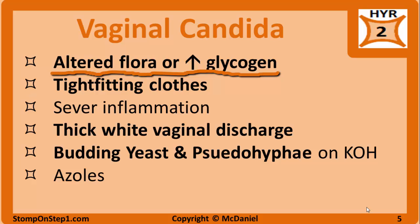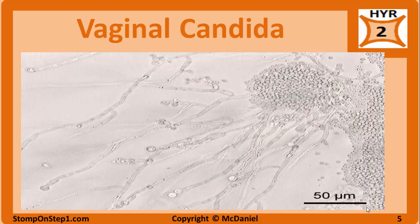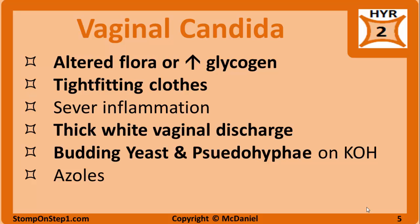It can also happen in individuals with increased glycogen, including diabetics, pregnant individuals, and women on oral contraceptives. Keeping the vagina warm with tight-fitting clothing, like a bathing suit, is also a risk factor. Severe inflammation leads to bright red erythema, vulvar pruritus, severe itching, burning, dysuria, and dyspareunia. There is a lumpy or thick, adherent, white cottage cheese-like discharge. Yeast infections are odorless, and vulvovaginal candidiasis has a normal pH. You can see an example of the budding yeast and pseudohyphae seen on the KOH portion of a wet prep. Treatment is over-the-counter topical miconazole (Monistat), oral fluconazole (Diflucan), or topical terconazole (Terazol).